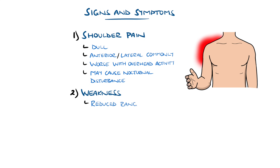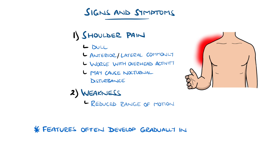There can also be weakness and loss of range of motion. In acute cases such as sudden trauma, these features may appear suddenly, whereas in longer standing overuse they may develop more gradually.